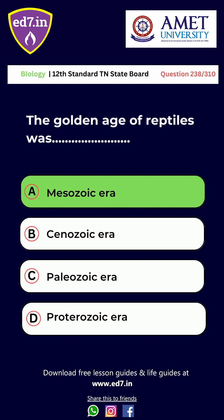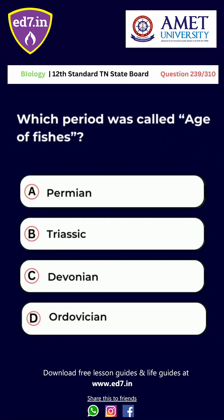Question number 239: Which period was called the age of fishes? A. Permian. B. Triassic. C. Devonian. D. Ordovician. The right answer is option C, Devonian.